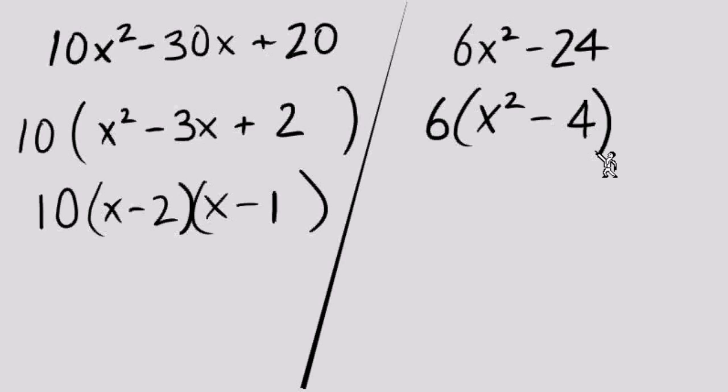Another difference of squares. There's our GCF, the 6. x² - 4 we factor as (x + 2)(x - 2). Hopefully that wasn't so bad for you. We're pretty smooth with the factoring.